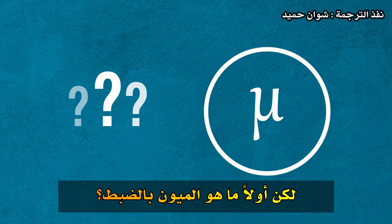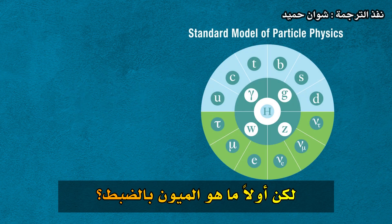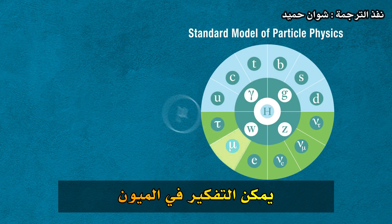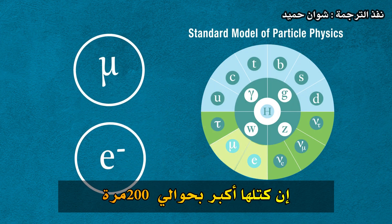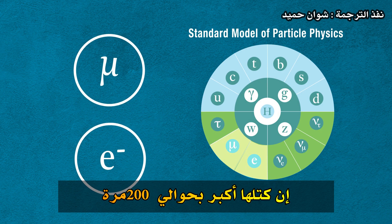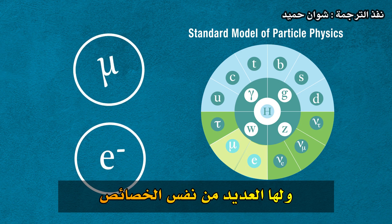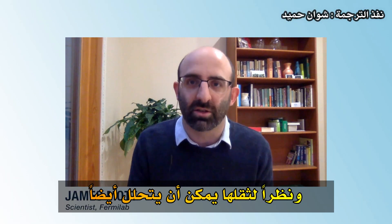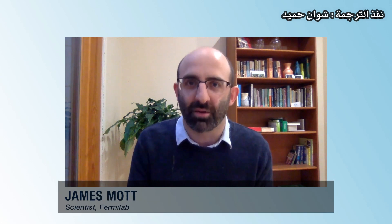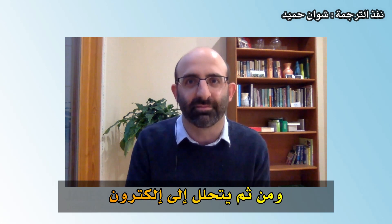But first, what exactly is a muon? A muon can be thought of as a heavier cousin of an electron. It's about 200 times more massive and has many of the same properties that an electron has, except that because it's heavier, it can also decay. In general, it takes about 2 microseconds and then it decays into an electron.